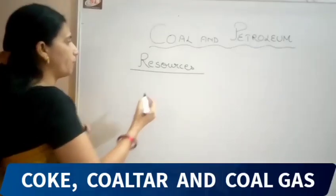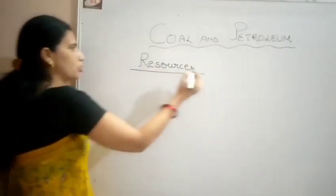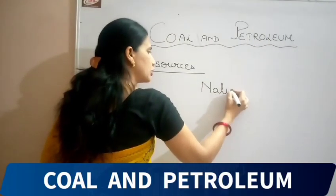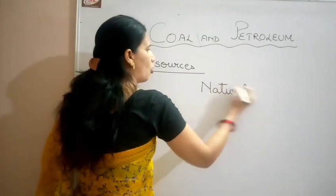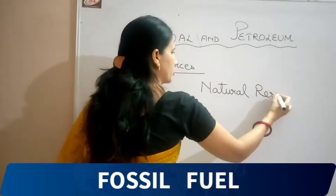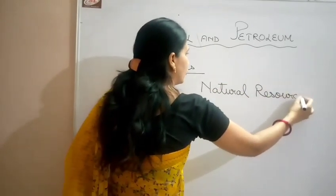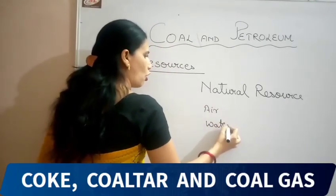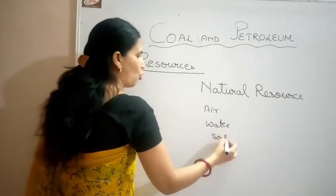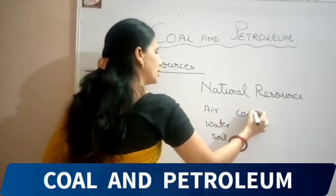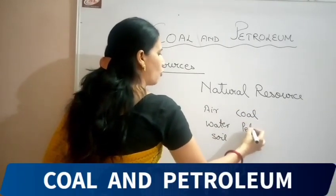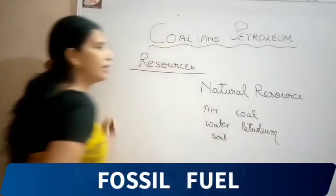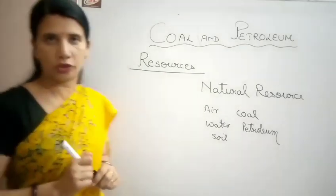Resources can be obtained from natural sources. Resources obtained from natural sources are called natural resources. For example, air, water, soil, coal, and petroleum — they all are natural resources. So here we will be discussing about natural resources.